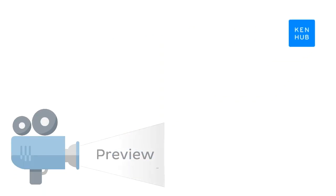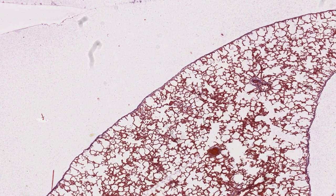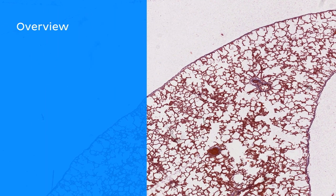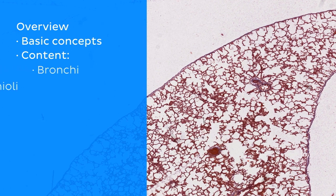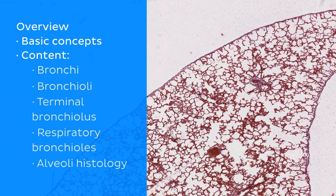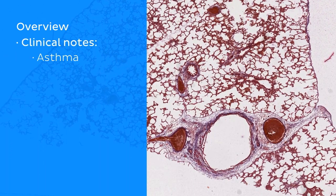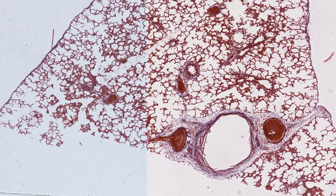Hey everyone, this is Nicole from Kenhub and welcome to our tutorial on the histology of the lung. In this tutorial we're going to be talking about the histology of the lower respiratory tract, starting with some basic concepts so you'll be able to make connections between the gross anatomy and the microscopic structures we'll be discussing later. After that we'll start travelling down the lower respiratory tract and we'll be discussing the histology of bronchi and how it differs from that of bronchioli. We'll then talk about the terminal bronchiolus, the respiratory bronchioles and the histology of the alveoli and then we'll make some remarks on the distinct features and the cytology of the alveoli. With regards to clinical notes we'll talk about a common disease of the lower respiratory tract known as asthma and finally we'll summarise the key points of this lecture. So let's start with the basics.